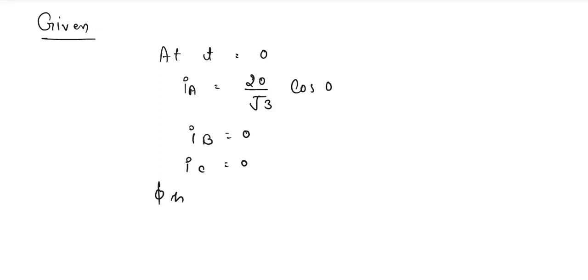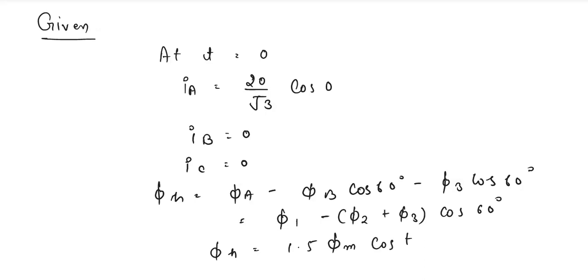So the value of phi H will be phi A negative phi B multiplied by cos 60, negative phi 3. That is, cos 60 degree is equal to phi 1 negative phi 2 plus phi 3, that will be multiplied by cos 60 degree. So the value of phi N will be equal to 1.5 times phi M multiplied by cos T.